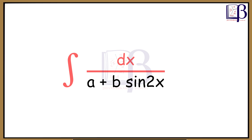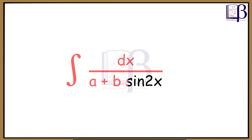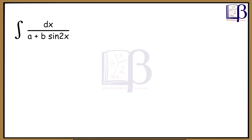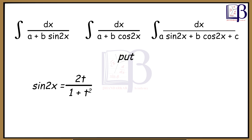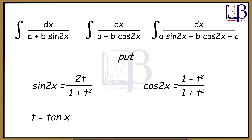Integration of dx upon (a + b sin x), or integration of dx upon (a + b cos x). Put sin(2x) = 2t/(1 + t²), cos(2x) = (1 − t²)/(1 + t²), where t = tan x, and dx = dt/(1 + t²).